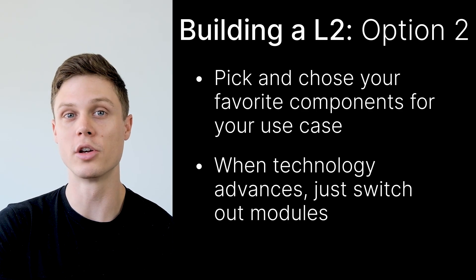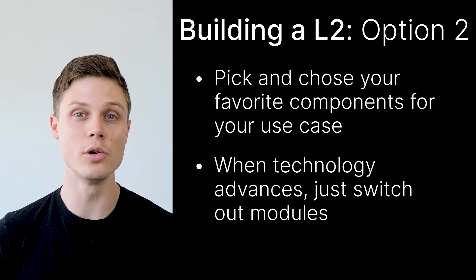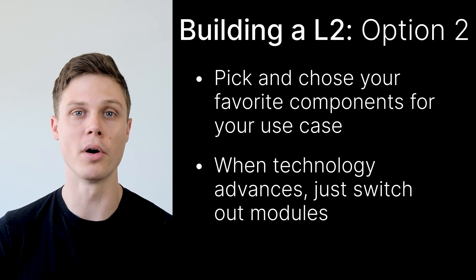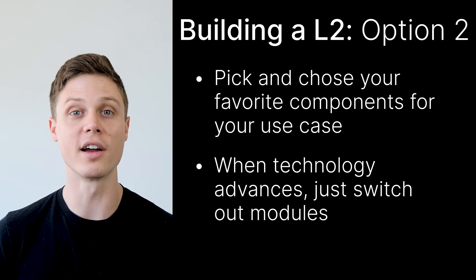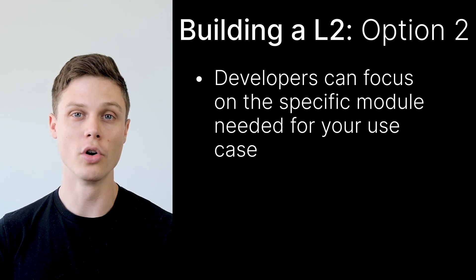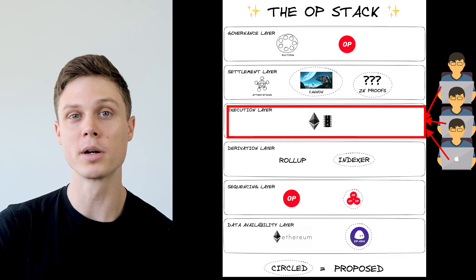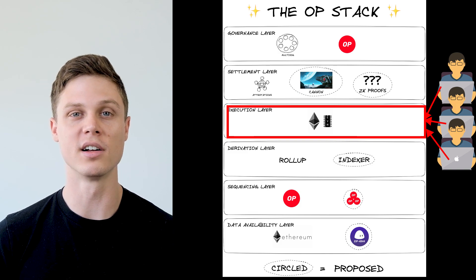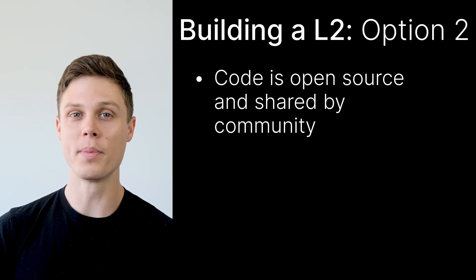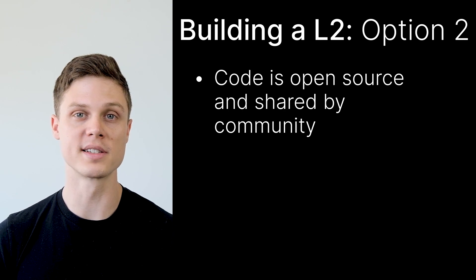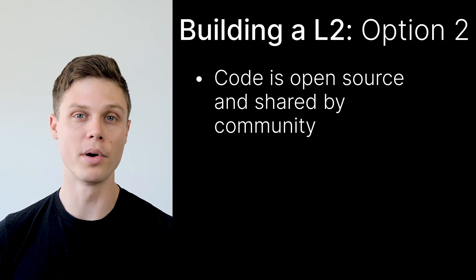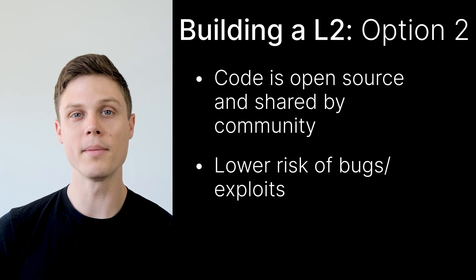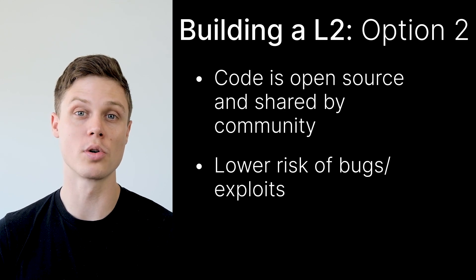Because your OP stack based layer 2 is modular, you can take newer advanced components and switch them out for your existing components without having to change your entire codebase. If you ever need anything specific to your network, you can have your developers focus on that specific module without needing to constantly worry about every single layer of the stack. Because the OP stack is shared by an entire community of developers and chains, each modular component is scrutinized and battle tested, which minimizes the possibilities of bugs or exploits. Obviously, the OP stack seems like the better option for any new chains coming onto the scene.